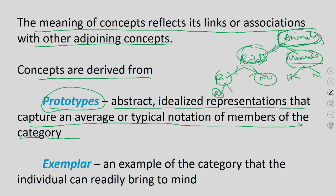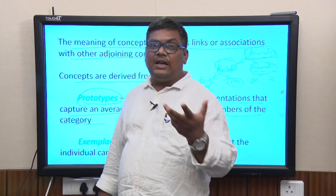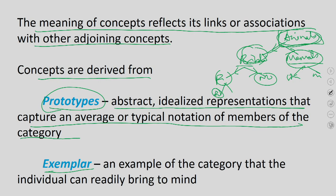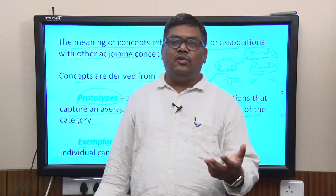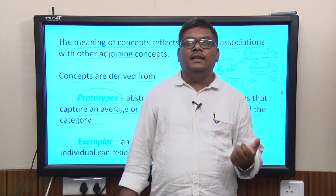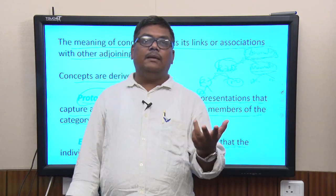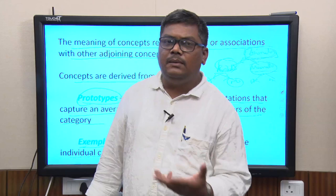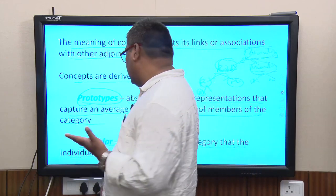Exemplars are the specific examples from which prototypes are defined — examples of a category that an individual can readily bring to mind. For example, when deriving the prototype of 'animal,' lion is an exemplar. When thinking of a car, Hyundai or BMW are exemplars. So concepts are organized in semantic networks, with the concept 'bitter' relating both to beer (and further to lager, ale, wine, cheese) and to the emotion 'resentful' (spiteful, angry, envious).